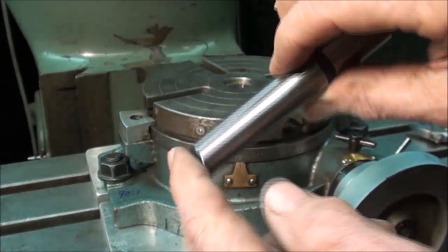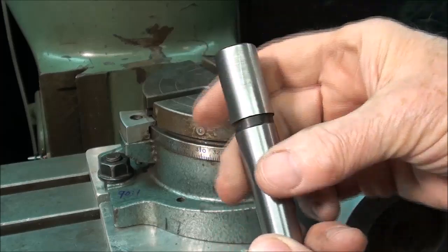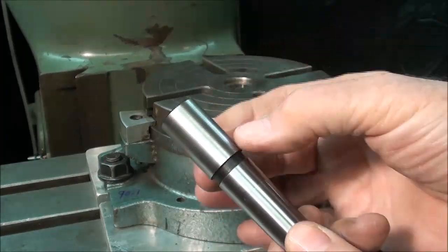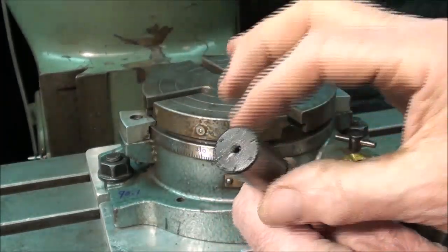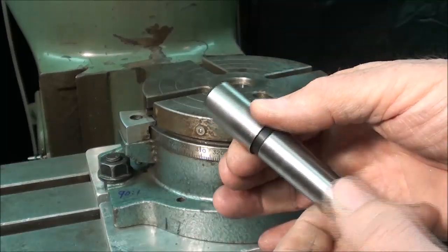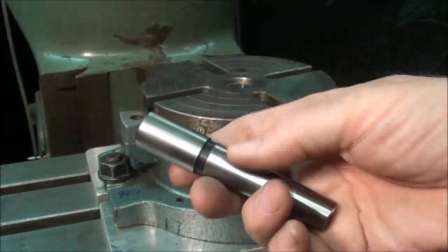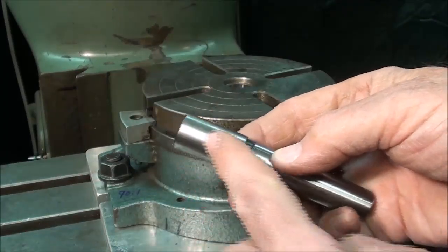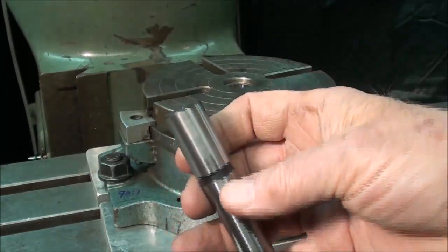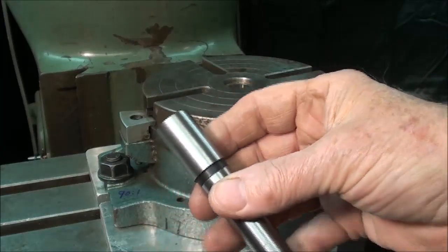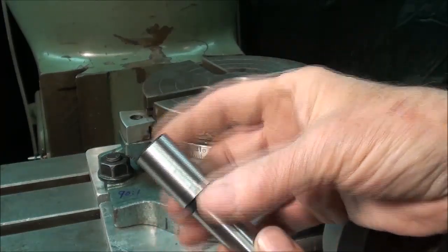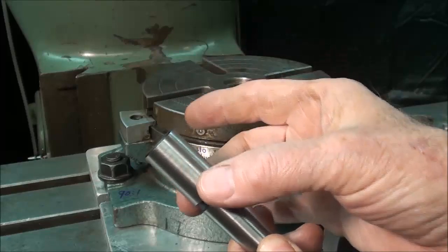I took a brand new shank that I bought, or arbor, it's a number two here, and I did saw off the tang because it was interfering. I sawed that off and put a little bit of a chamfer on there. On this particular end here, this is exactly three-quarters of an inch in diameter.